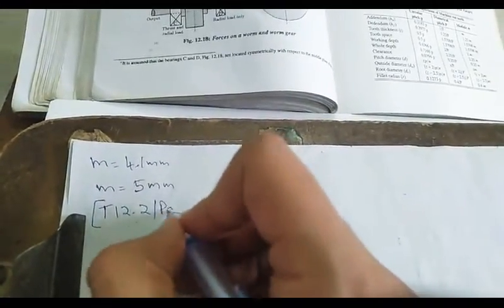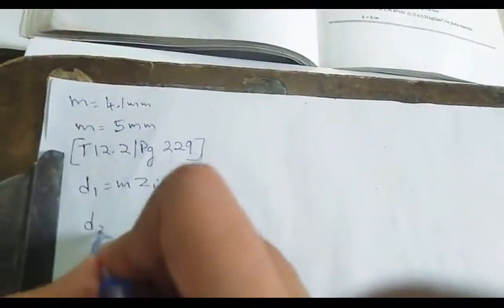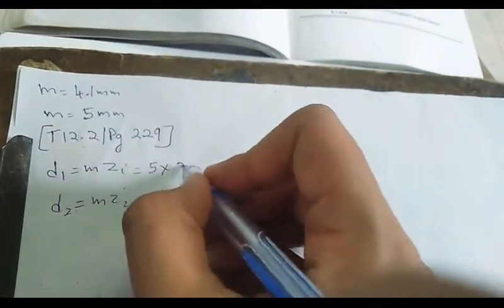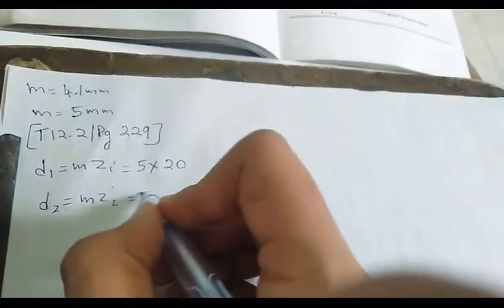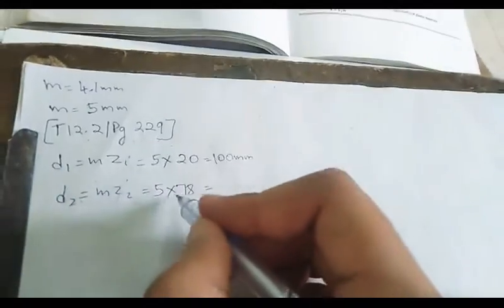From table 12.2, page number 229, once we get the value of module we can find the diameters. d1 is equal to m·z1 and d2 is equal to m·z2. With z1 = 20 and z2 = 78, the values of diameter we get are d1 = 100 mm and d2 = 390 mm.